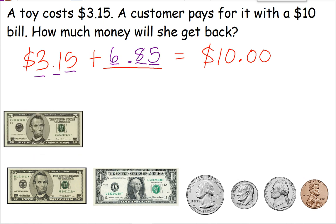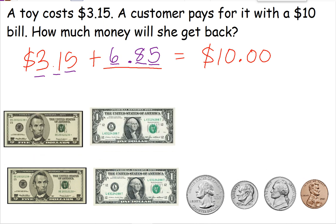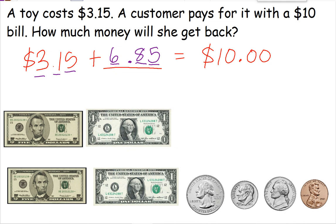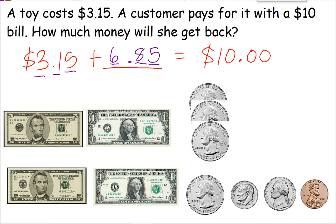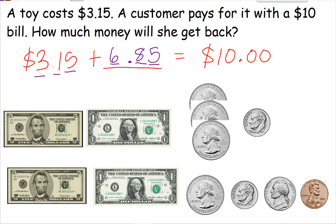That looks like this: 5, 6 dollars. Then we have 25, 50, 75, and then 85 cents. So she'll have a $5 bill, a $1 bill, 3 quarters, and 1 dime.